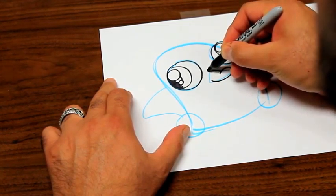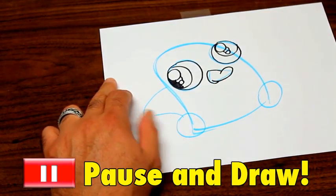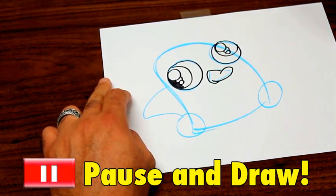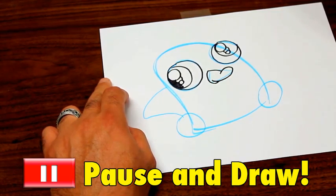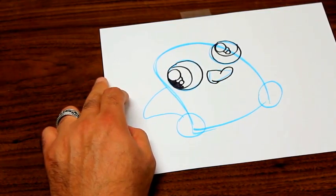And then we will sort of just come down and around like this and that gives us a cute little easy to draw beak or bill for the platypus character, and because of the way we curved lines he's giving us a little smile.